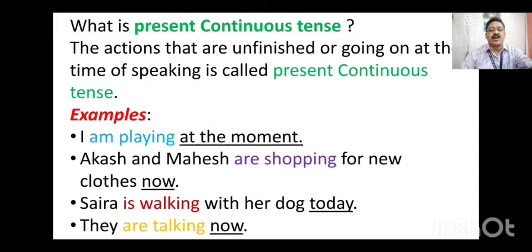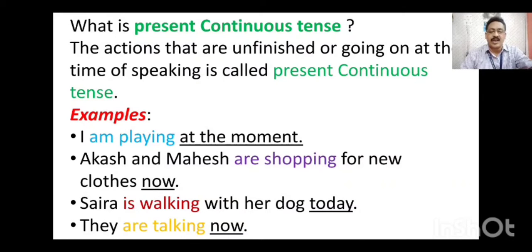The third example: 'Saira is walking with her dog today.' Here 'today' indicates we are talking about the present time. 'Is walking' — I have written 'is' not 'are' because Saira is a singular subject. When we write about a singular subject we use 'is,' and the verb is in the -ing form. So 'Saira is walking with her dog today' — 'is walking' is the present continuous form of the verb. Next: 'They are talking now.' 'They' is a plural subject — used for more than one person — so we use 'are.' 'Talk' is the verb; when we add -ing it becomes the continuous form. 'They are talking now' shows the verb is in present continuous tense.